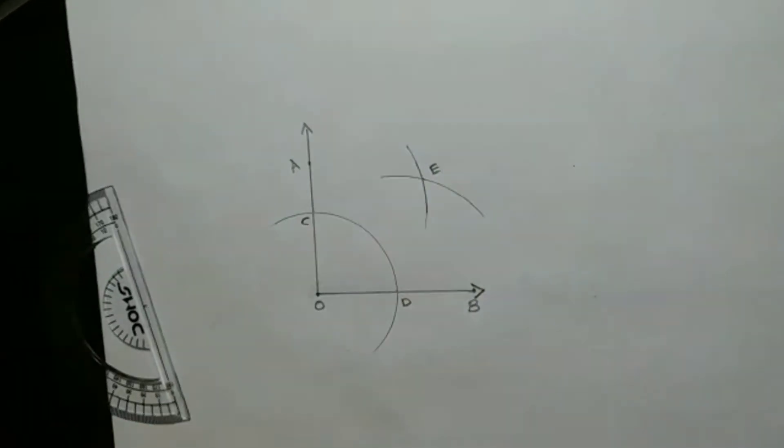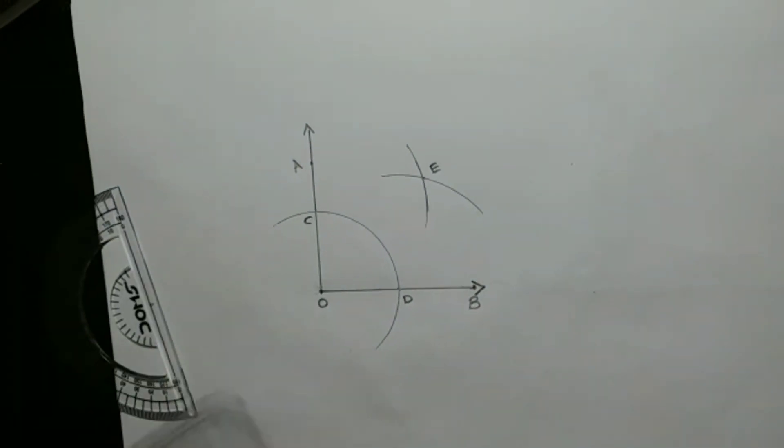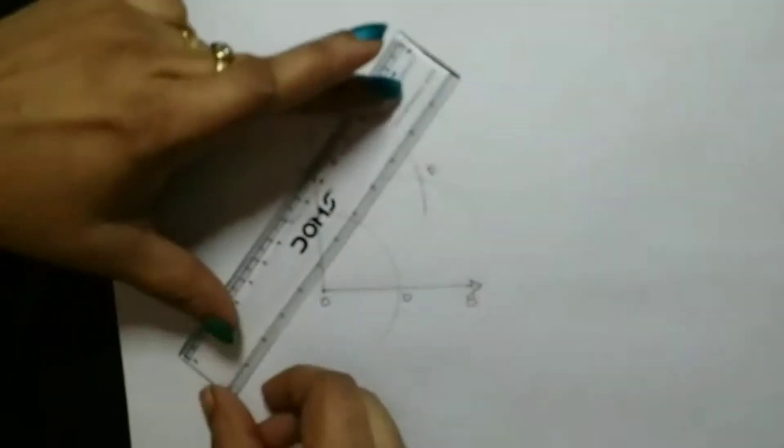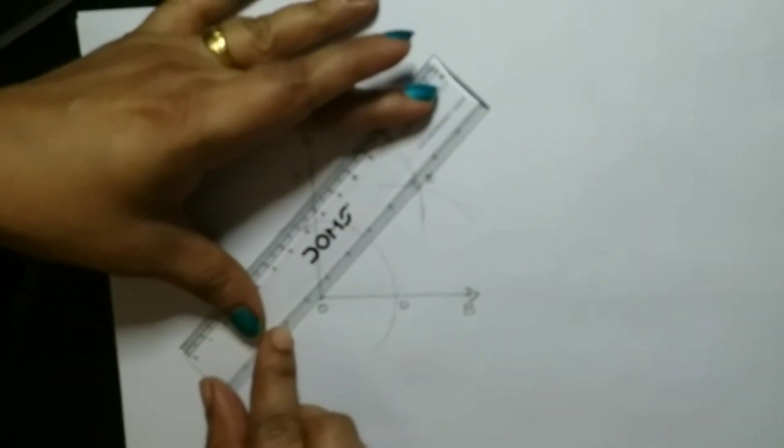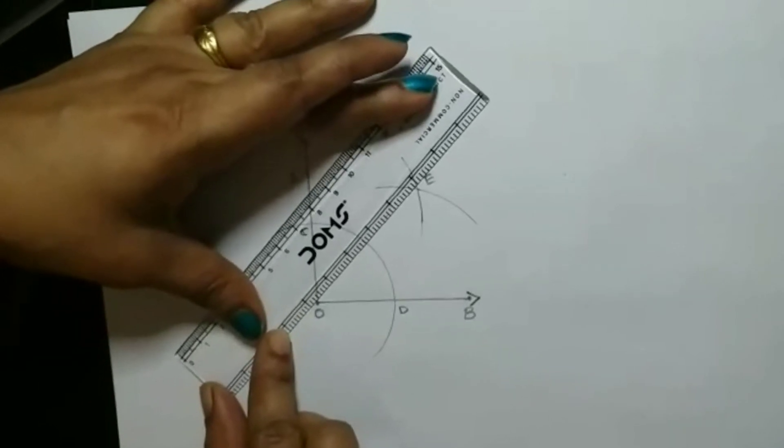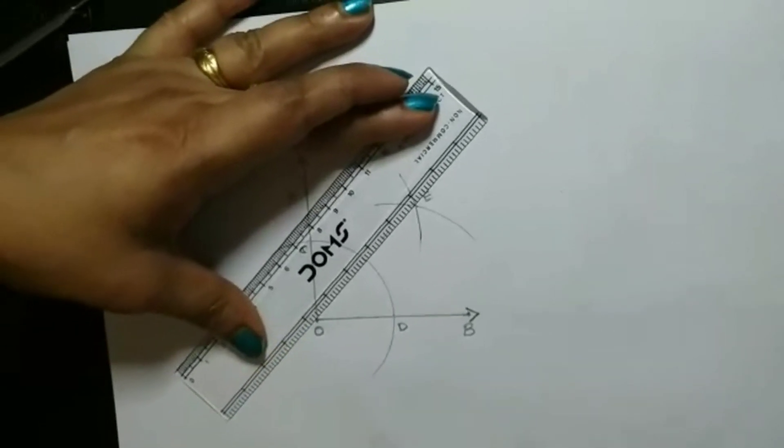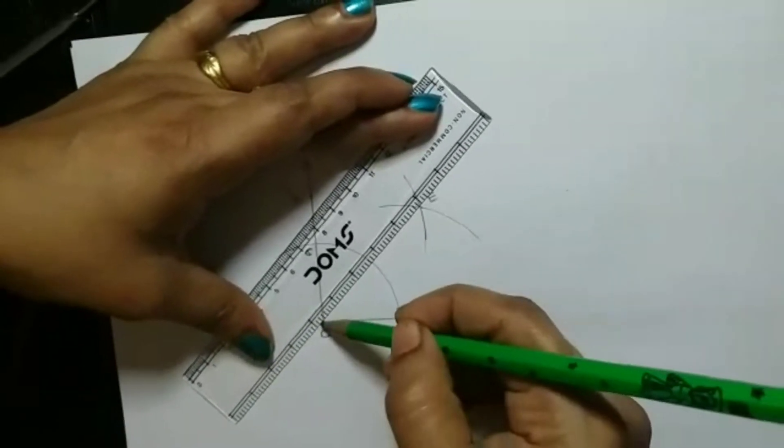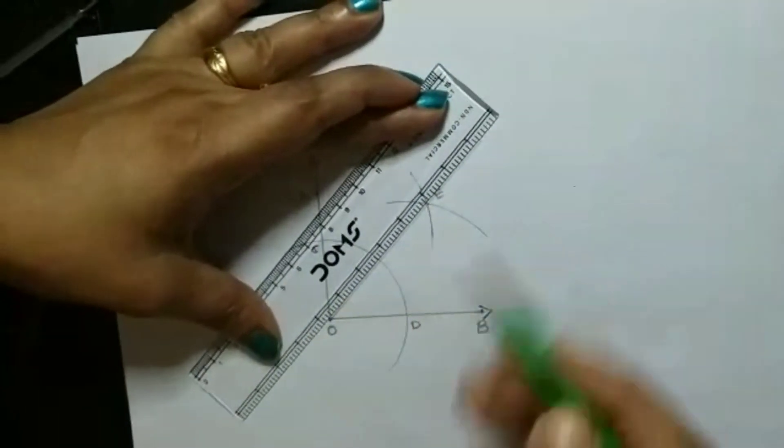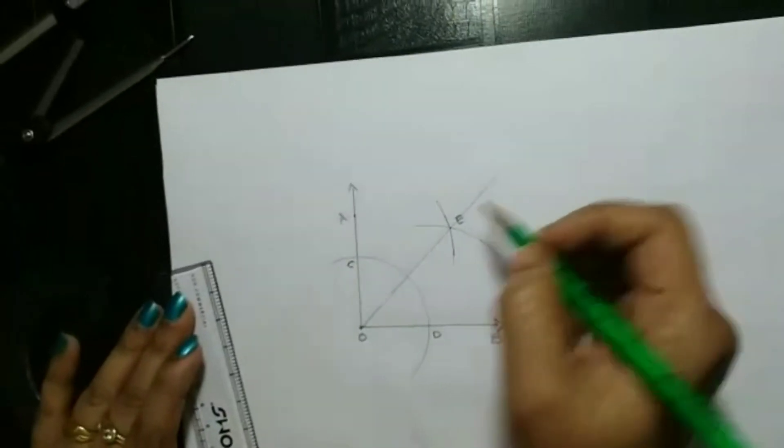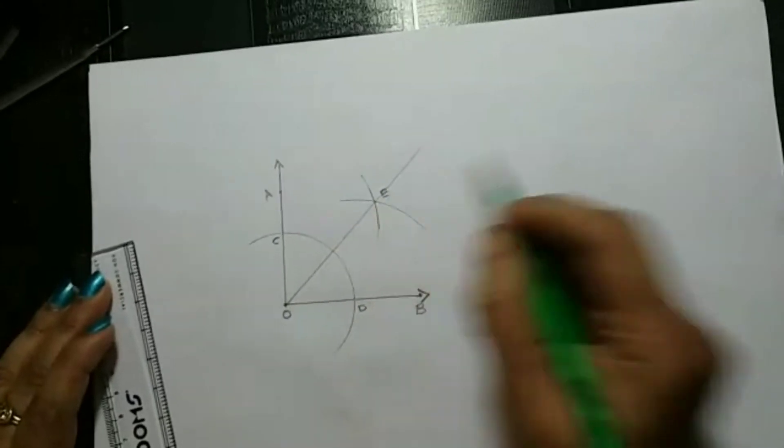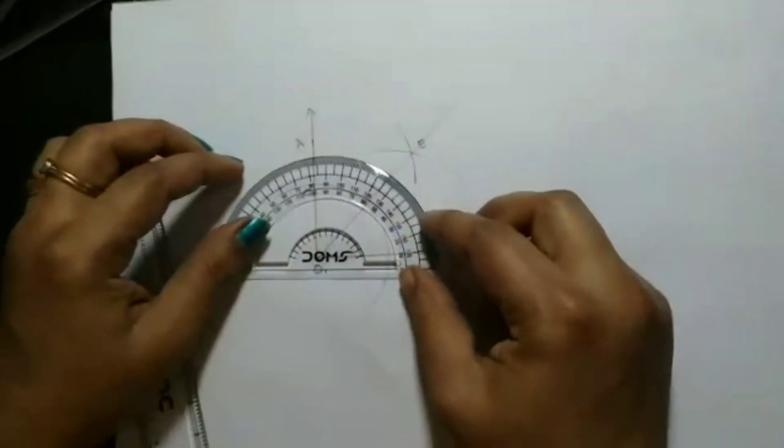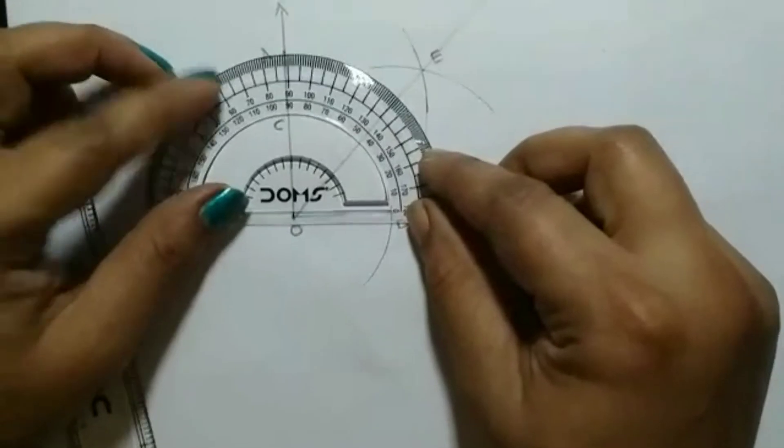Now I am going to connect O and E. I am getting both the points in one line. So this is my line segment, it is just passing through O and E. Now we can check whether you got exactly 45, 45 degrees.